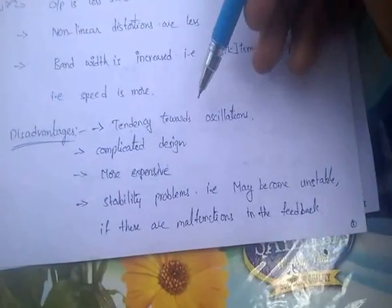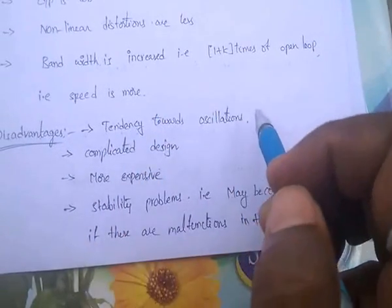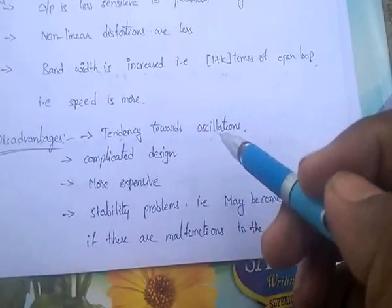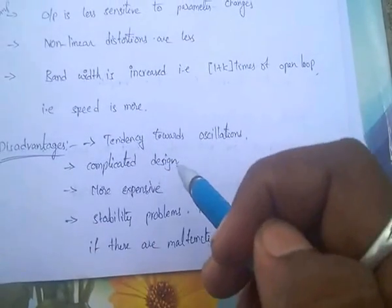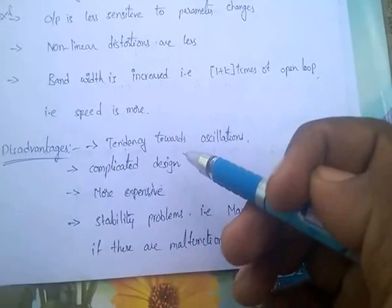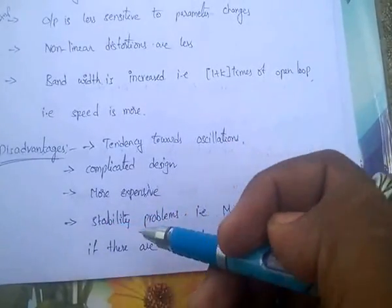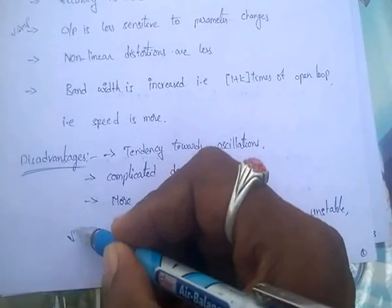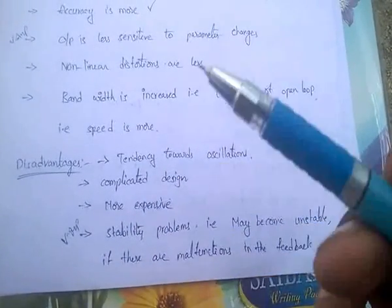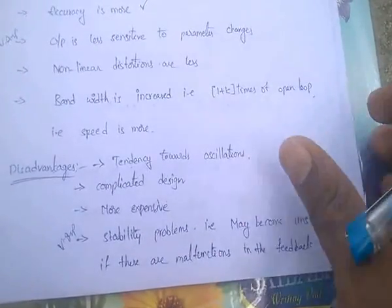Disadvantages of closed loop control systems: tendency towards oscillations, complicated design, and they are more expensive. There are also stability problems — stability problems occur only in closed loop control systems. In open loop control systems, there are no stability problems.